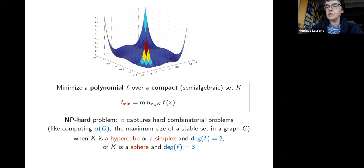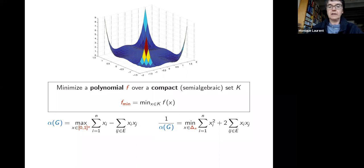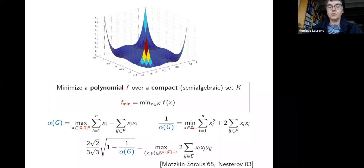This problem has very versatile optimization formulations via optimization either over the hypercube, the simplex, or the unit sphere. The stability number can be reformulated using any of these three domains. This indicates that even optimization over very simple-looking feasible regions is interesting.